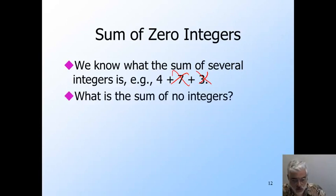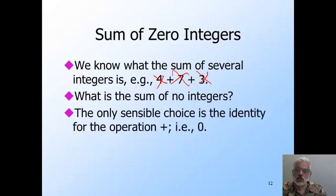Now, if I take the 4 away, what's left? What is its sum? I claim that in general we should take the operation applied to nothing to be the identity for that operation. For sum, the identity is 0. That is 0 plus anything is that other thing.